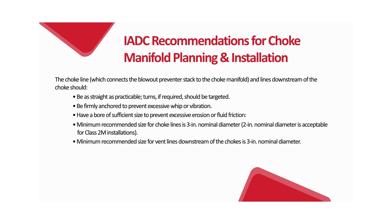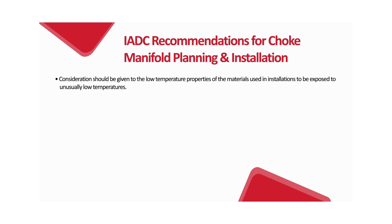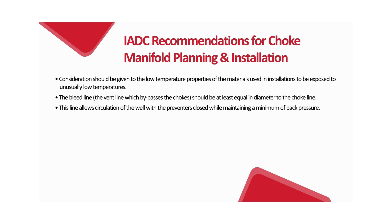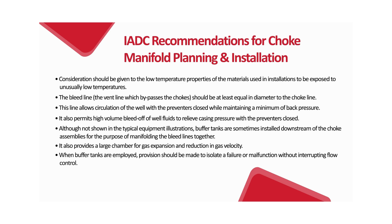Minimum recommended size for vent lines downstream of the chokes is 3 inches nominal diameter. Alternate flow and flare routes downstream of the choke line should be provided so that eroded, plugged, or malfunctioning parts can be isolated for repair without interrupting flow control. Consideration should be given to low temperature properties of materials used in installations exposed to unusually low temperatures. The bleed line — the vent line which bypasses the chokes — should be at least equal in diameter to the choke line, allowing circulation with preventers closed and high volume bleed-off of well fluids to relieve casing pressure. Buffer tanks are sometimes installed downstream of choke assemblies for manifolding bleed lines and providing a large chamber for gas expansion and velocity reduction; provision should be made to isolate any failure without interrupting flow control.